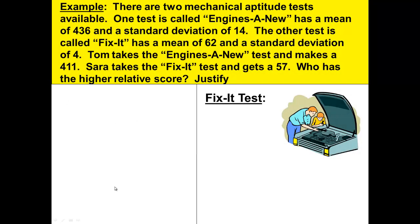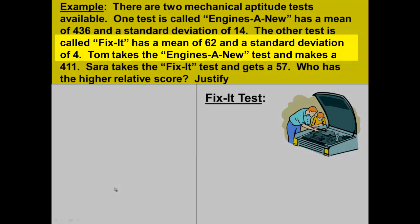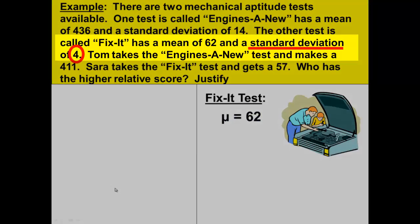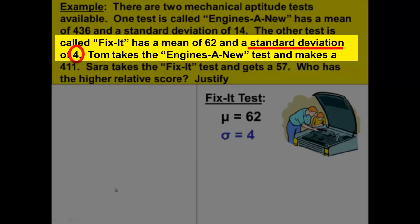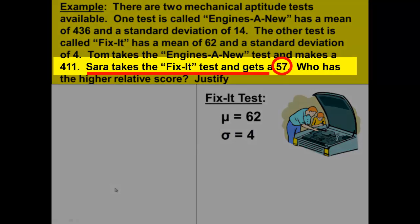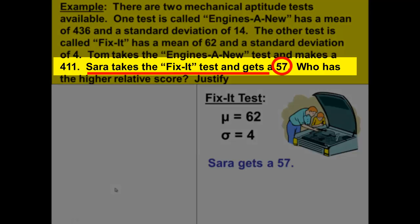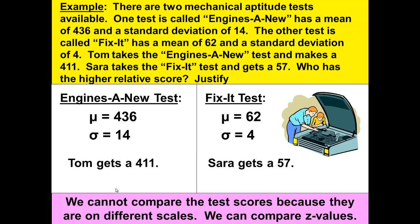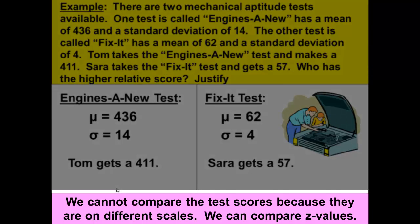Next, let's organize our information for the Fix-It test. It has a mean of 62, a standard deviation of 4, and Sarah took this test and got a 57. Notice the organization — you do want to be able to keep track of your information. You cannot compare the test scores because they are on different scales.